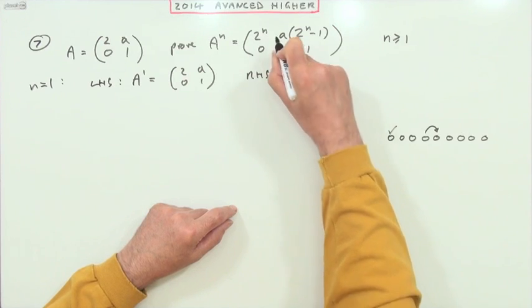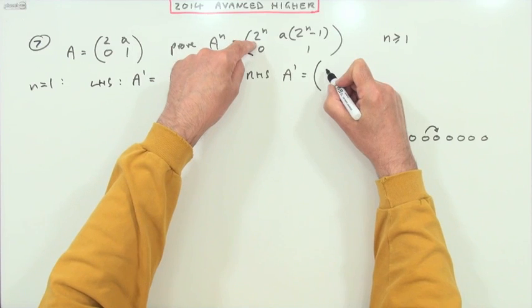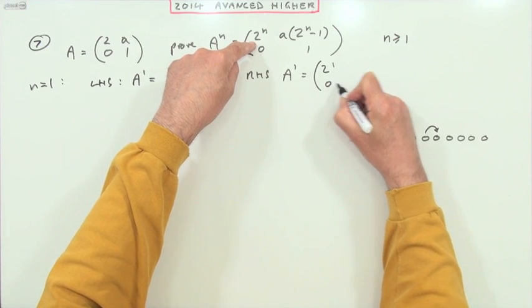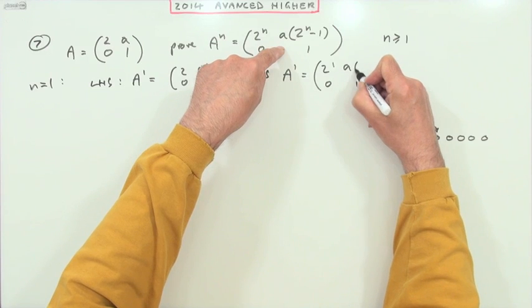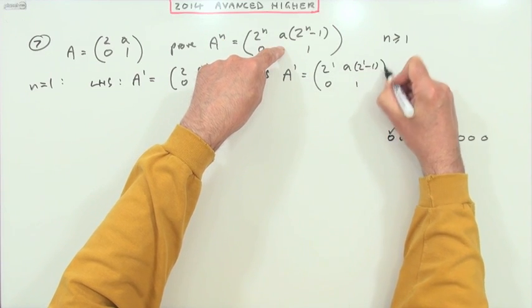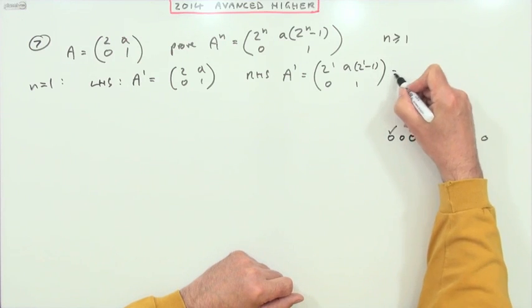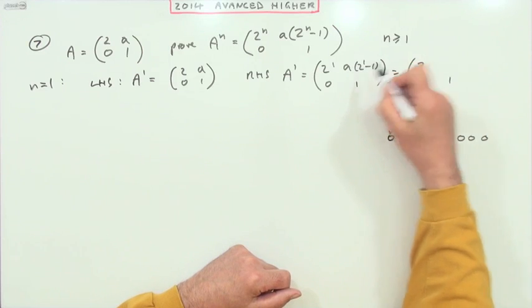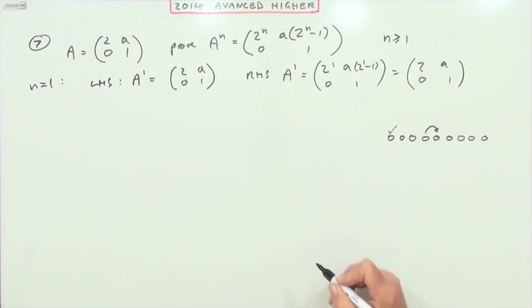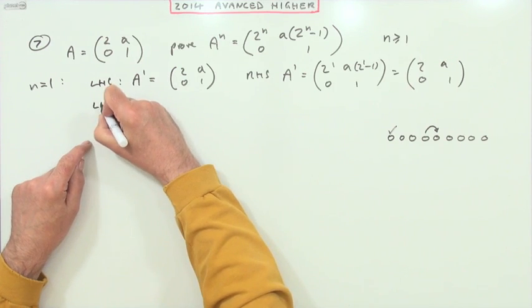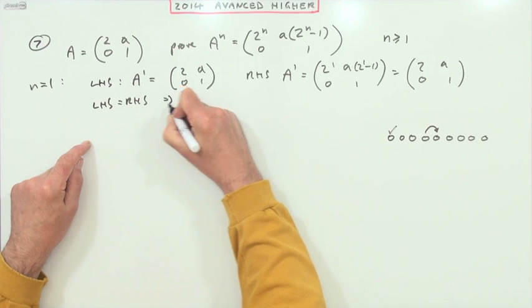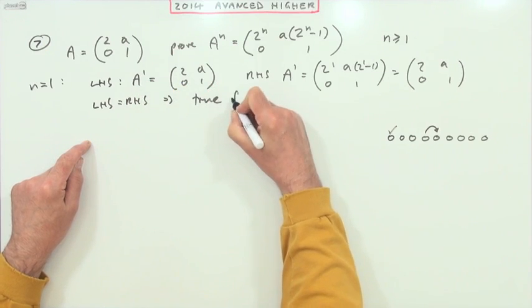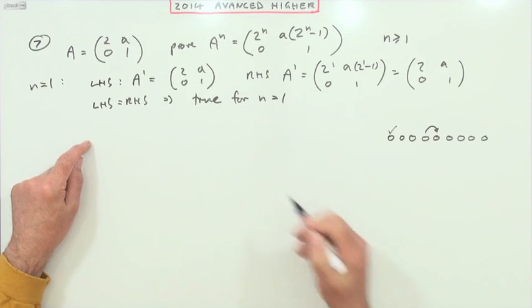A to the power 1 using this statement would be that I'd have 2 to the power 1, 0, 1, and a times 2 to the power 1 minus 1. Well that is just 2, 0, 1, 2 take away 1 is 1, a. So that means it's true at the start. Left hand side is equal to the right hand side, which means—this is the important bit—it's true for n equals 1.